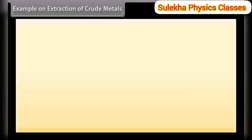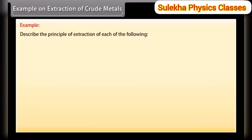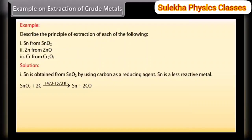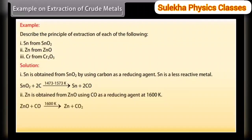Example on extraction of crude metals. Describe the principle of extraction of each of the following: Sn from SnO₂, Zn from ZnO, Cr from Cr₂O₃. Solution: Sn is obtained from SnO₂ using carbon as a reducing agent, as Sn is a less reactive metal. Zn is obtained from ZnO using CO as a reducing agent at 1600 Kelvin. Cr is obtained from Cr₂O₃ using the aluminothermic process.